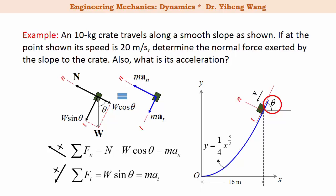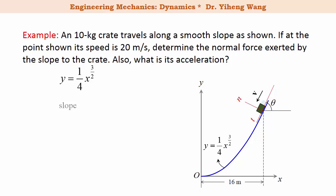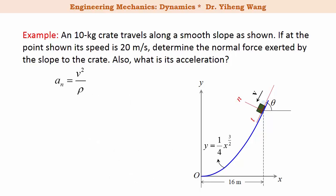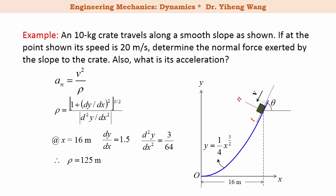Now let's identify the known information. Because the equation of the path is given, the slope at any point is dy/dx, which in this case is (3/8)·x^(1/2). Therefore at x = 16 m, the slope evaluates to 1.5, which equals tan(θ), giving θ = 56.3°. The normal acceleration is a_n = v²/ρ, where v = 20 m/s and ρ is the radius of curvature determined from the path equation. At x = 16 m, ρ = 125 m, so a_n = 3.2 m/s².